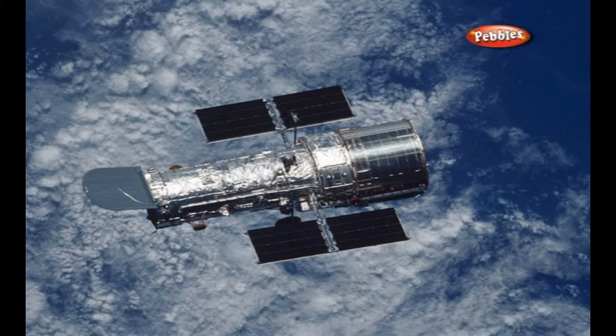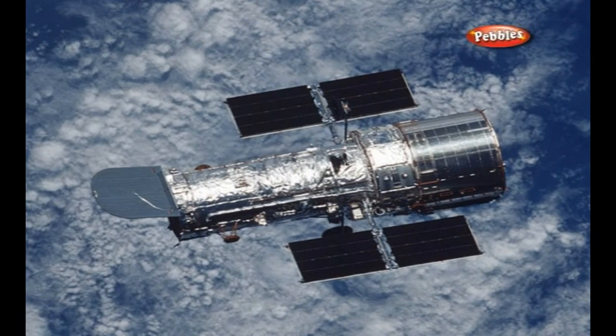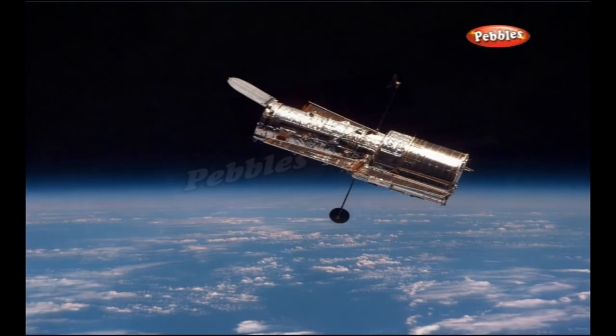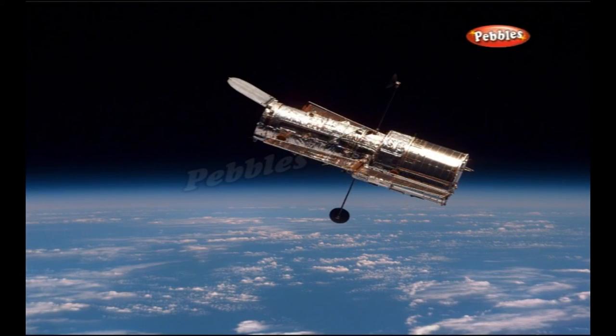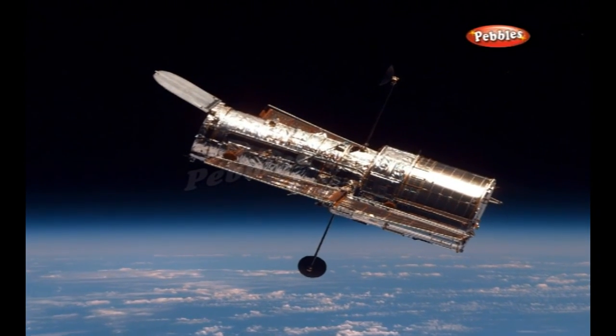Probably the world's most famous telescope today is the Hubble Space Telescope. It is a reflecting telescope that orbits 600 kilometers above the Earth. Because it is above the Earth's atmosphere, Hubble is able to see faraway objects more clearly than any telescope in history.